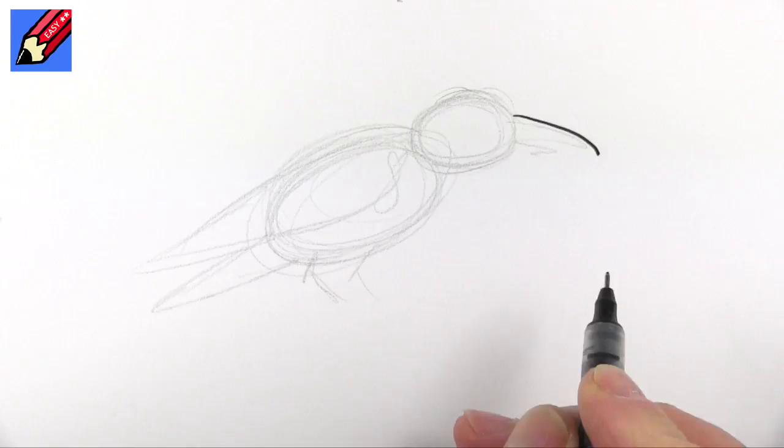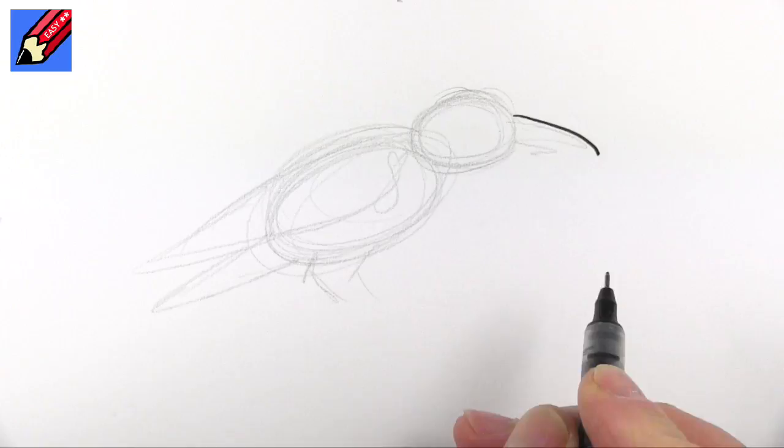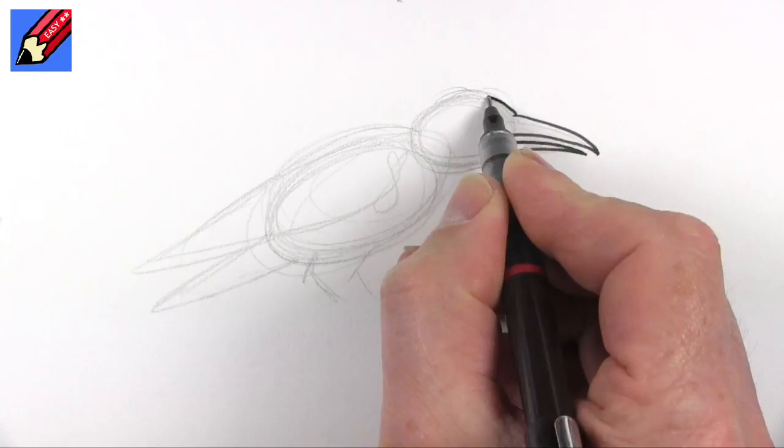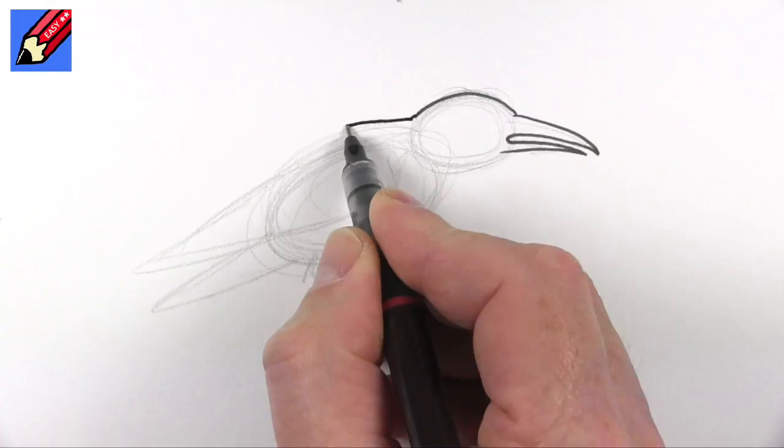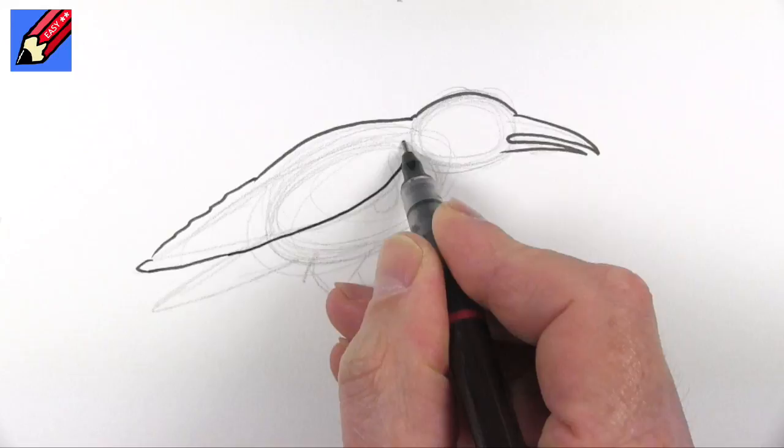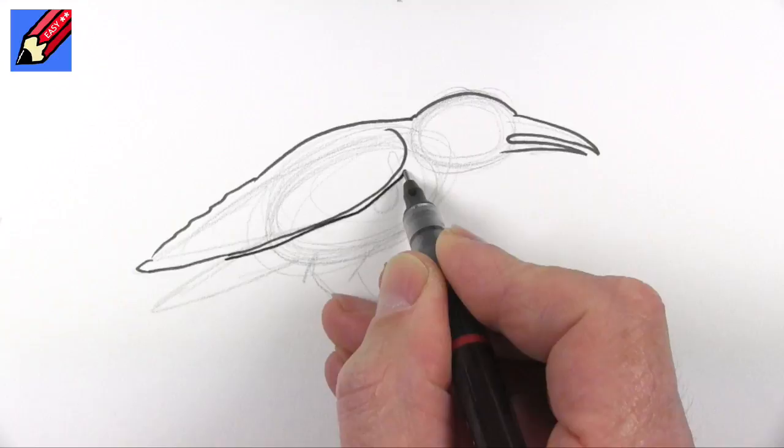Now the raven has a really long kind of hooked bill. And then this wants to come back like that and then around and down like that. And then we'll take that back to about there. And then we want it to really sort of be shrugging its shoulders in that kind of creepy way, sitting there, watching what's going on.